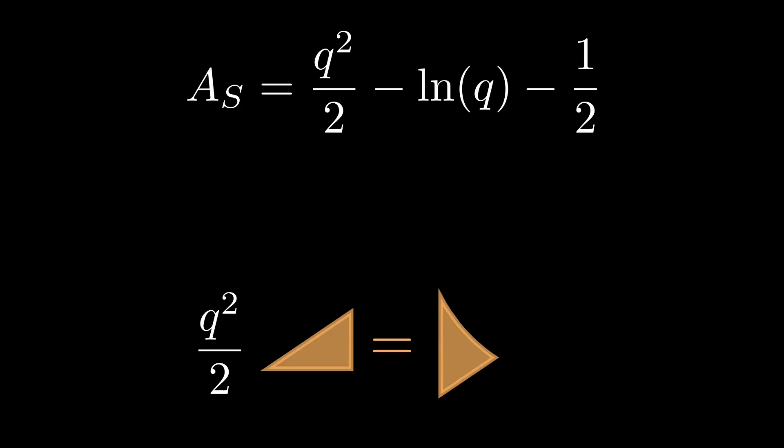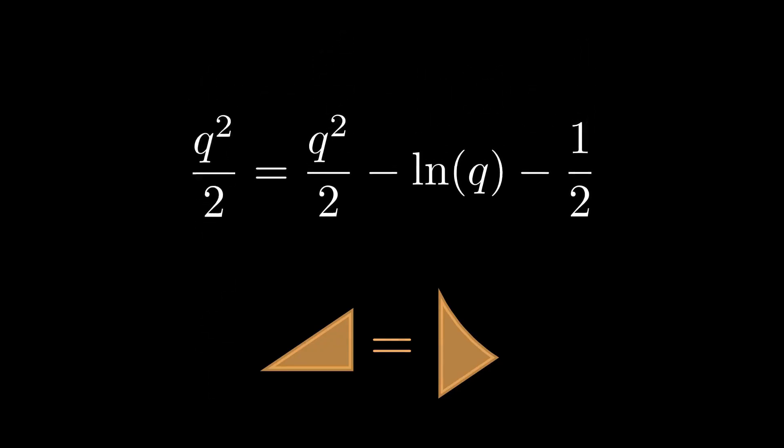We're almost done. We can now set these two values, At and As, equal to each other, which gives us this mess. Notice that we can subtract q squared over 2 from both sides, simplifying this problem greatly.